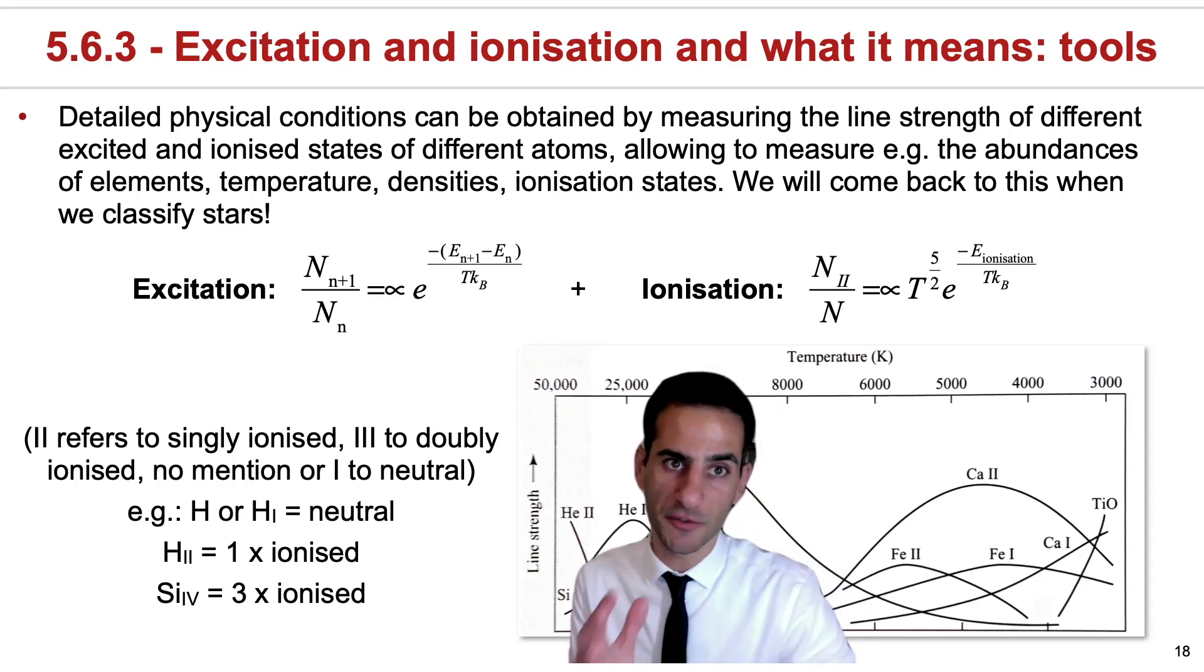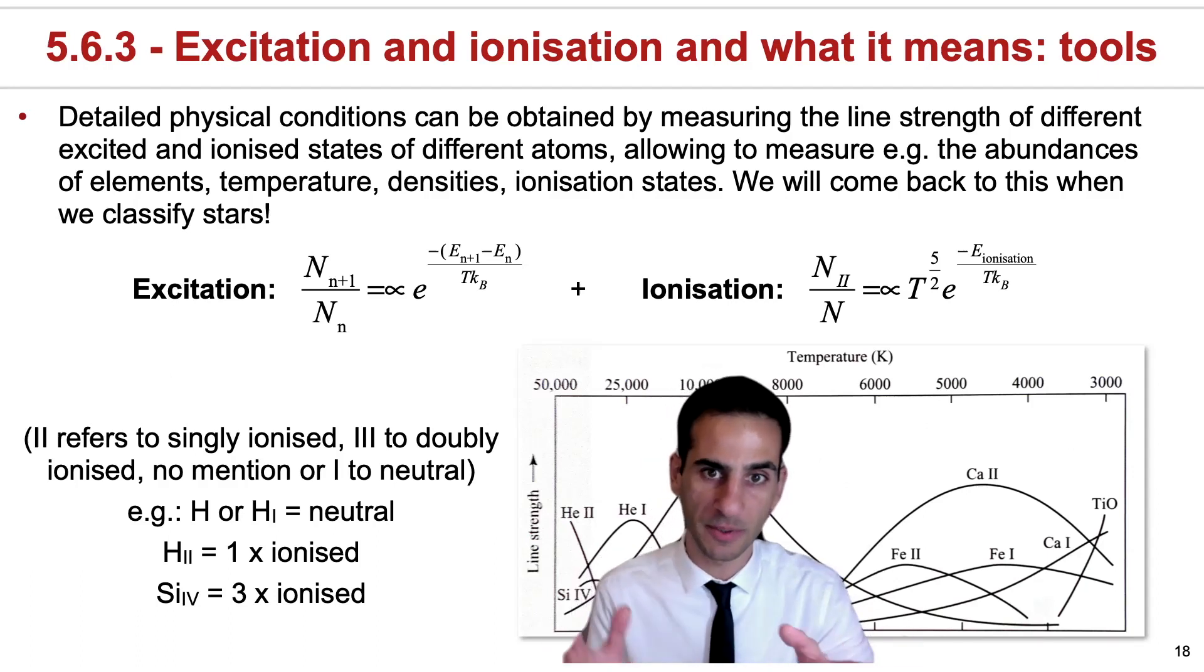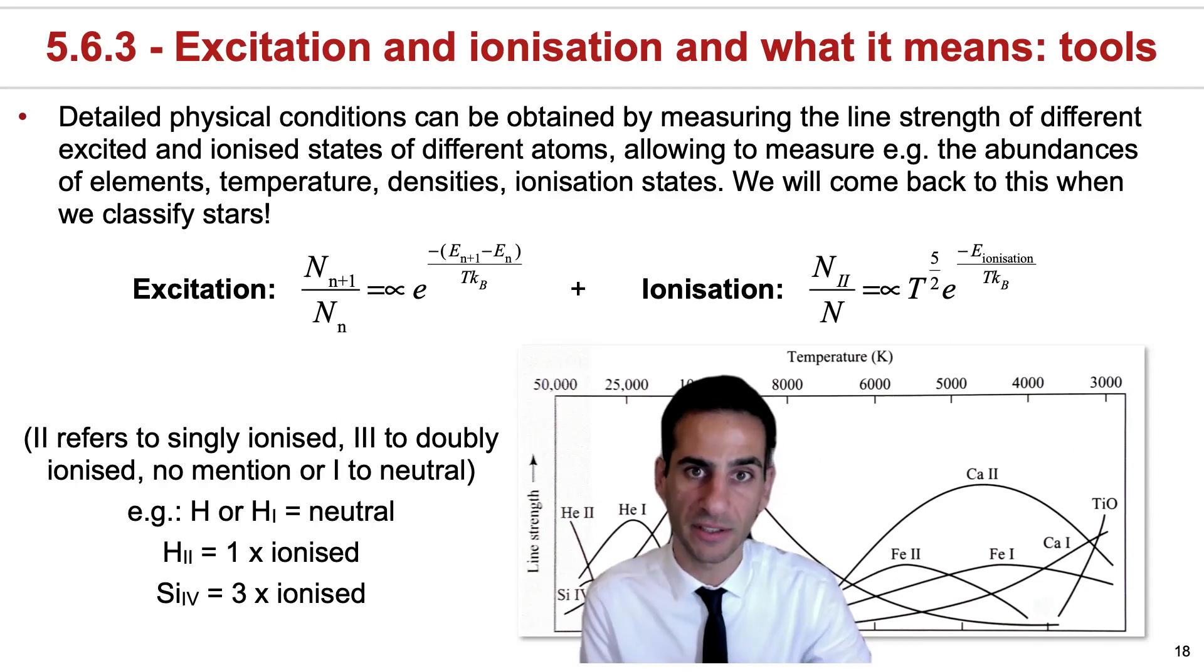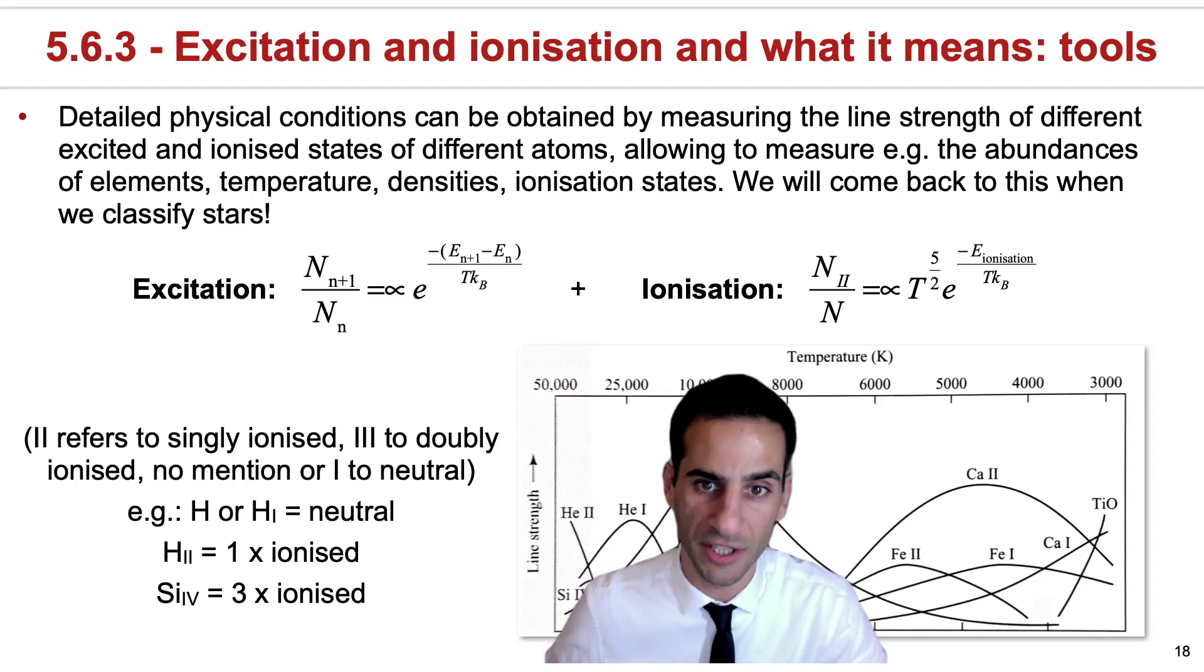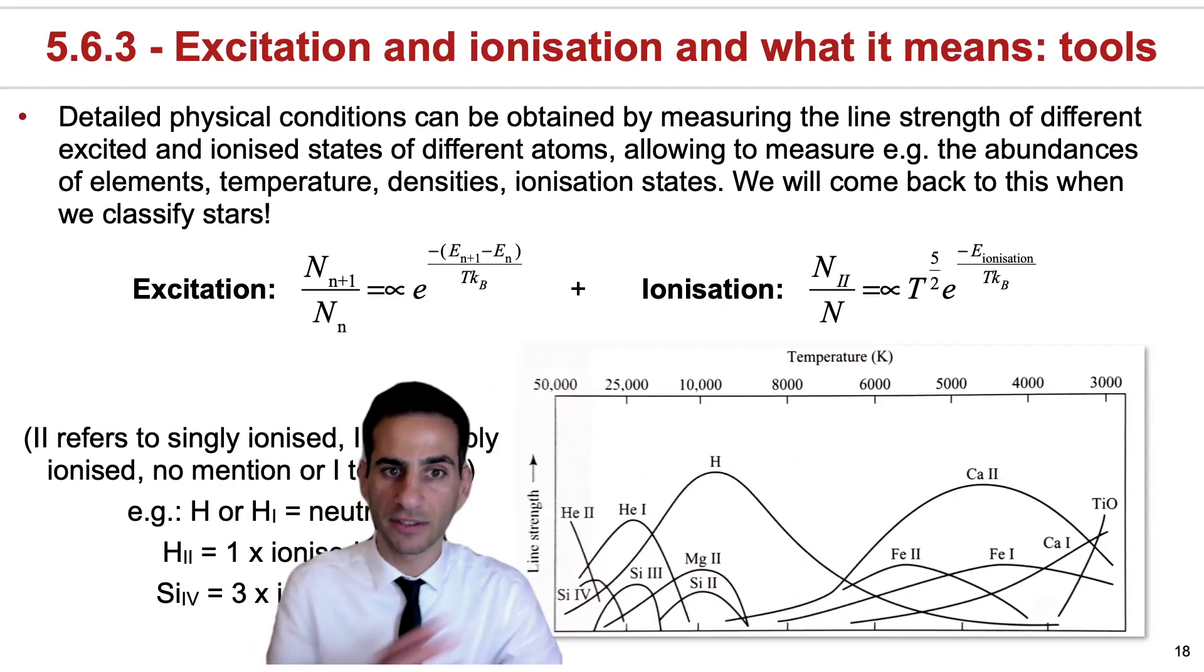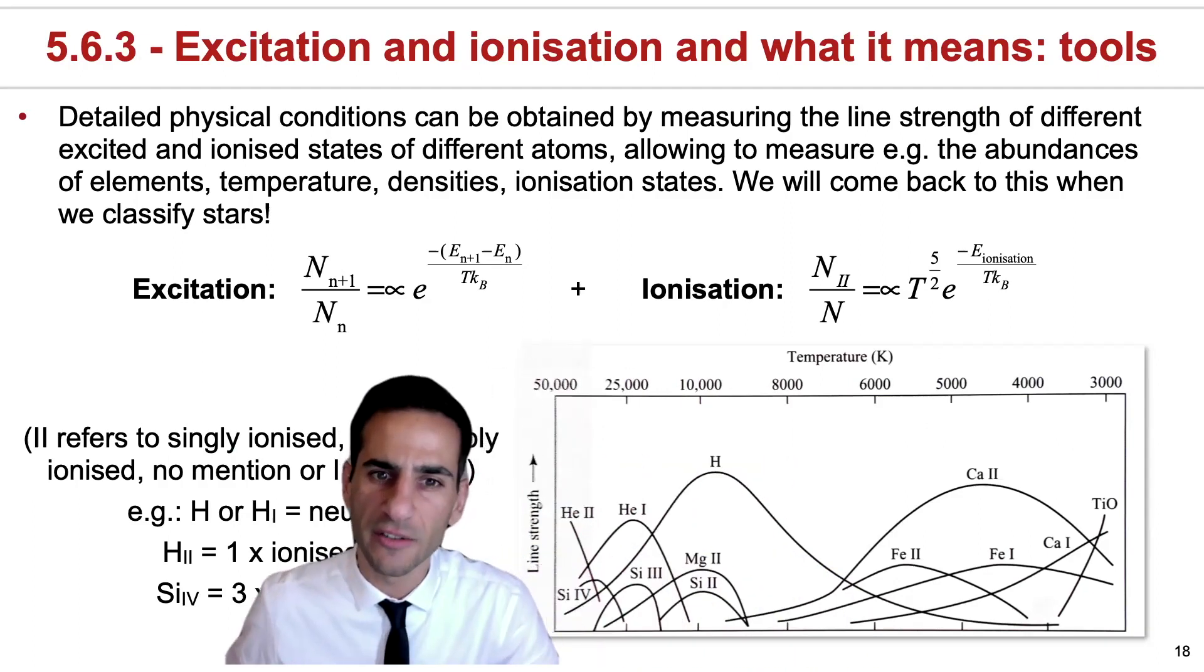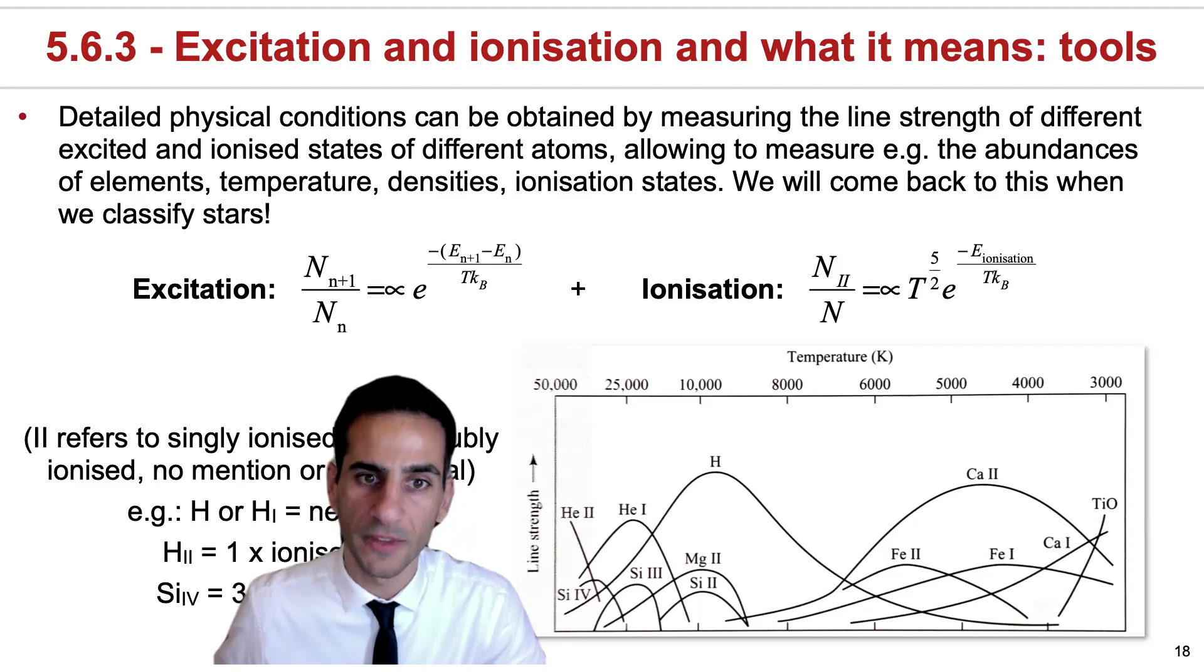Now, what's really exciting about astrophysics, once you start dealing with the Boltzmann and Saha equation, is that you can actually infer detailed physical conditions by measuring line strengths. And you realize that you actually need both excitation and ionization.